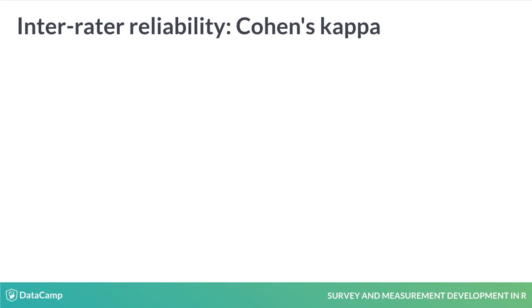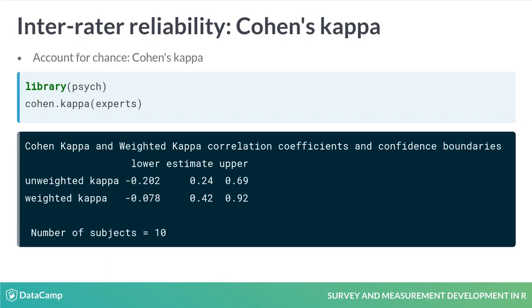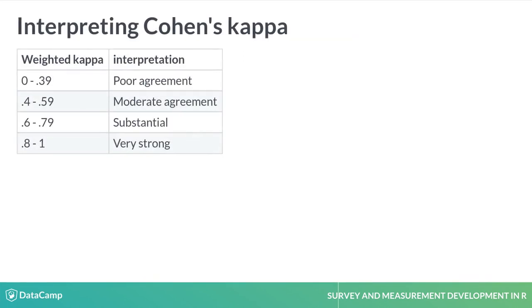Raw agreement does not account for agreement being due to random chance. To adjust for that, we will use Cohen's kappa. The psych package includes the Cohen.kappa function. Because our rankings are ordinal, the weighted kappa provides a more robust measure of agreement. We'll use the guidelines here to assess the extent of inter-rater reliability.